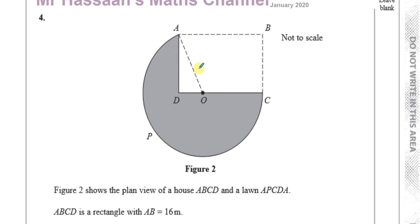It says ABCD is a rectangle with AB equals 16 meters. Let's start putting that length in — 16 meters. It's a rectangle, so all the corners are right angles, so this is a right angle, this is a right angle, this is a right angle — that might help us.